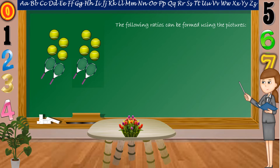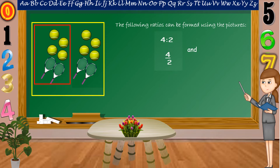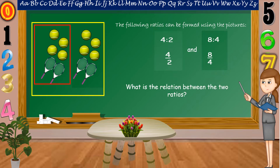Ratios can be written in colon form or in fraction form. So, if we're going to compare four balls and two rackets, our first ratio is four is to two in colon form and four-halves in fraction form. And if we're going to compare eight balls to four rackets, our ratio is eight is to four, or eight-fourths. What is the relation between the two ratios, four is to two and eight is to four?